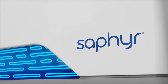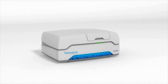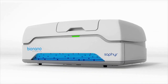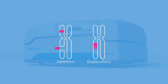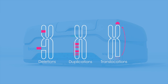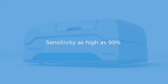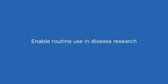This is SAFIRE from BioNanoGenomics. With it, you can directly image the genome at high resolution to detect variations such as deletions, duplications, translocations, and inversions, known as structural variations, with sensitivity as high as 99%. The process is simple and automated to enable routine use in disease research.